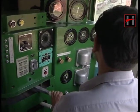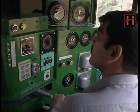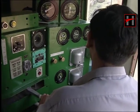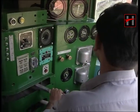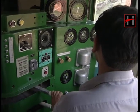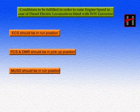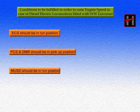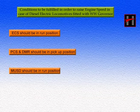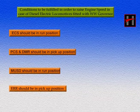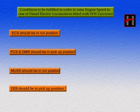To raise the engine speed of locomotives fitted with a Woodward governor, all the conditions prescribed earlier in the case of the governor control engine speed circuit for locomotives fitted with an EDC governor must be fulfilled — that is, the ECS should be in run position, PCS and DMR should be in picked-up position, and the multiple unit stop device should be in run position. In addition to these conditions, the engine run relay, or the ERR, should be in picked-up position.